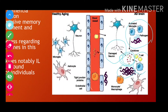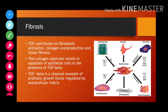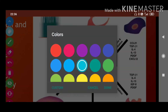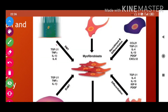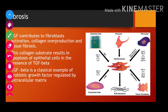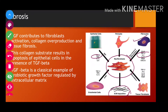Interleukin-1 alpha and interleukin-1 beta have been implicated in the sequence of cytokine events leading to fibrosis. TGF-beta plays a key role here — it has a myofibroblast effect. Epithelial cells, endothelial cells, tissue fibroblasts, and fibrocytes release TGF-beta, a pro-fibrotic growth factor, because it regulates ECM and causes fibroblast differentiation into myofibroblasts, leading to collagen overproduction and tissue fibrosis.